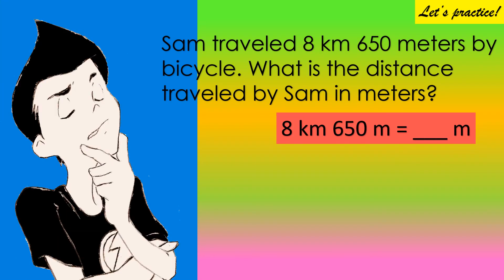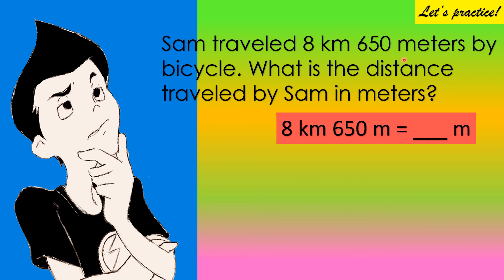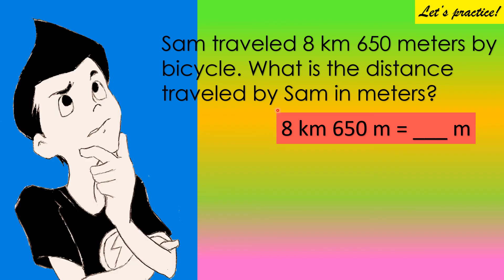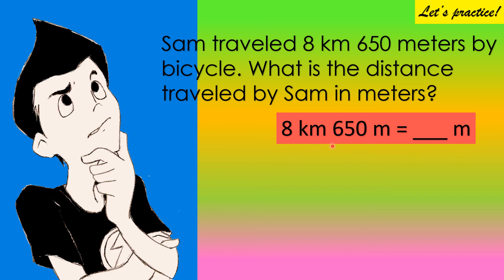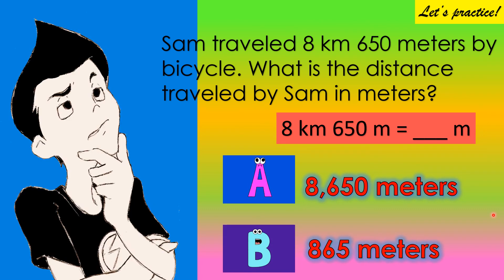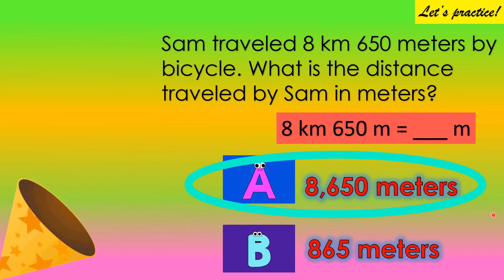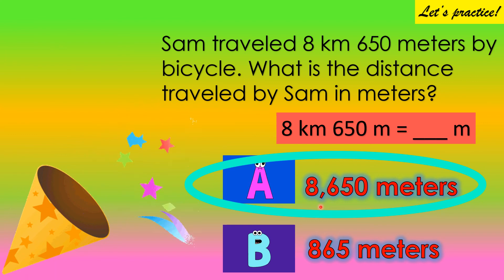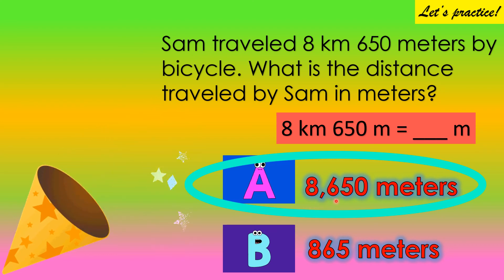Let's read this word problem. Sam traveled eight kilometers and six hundred and fifty meters by bicycle. What is the distance traveled by Sam in meters? Choose your answer between letter A and letter B. The correct answer is letter A — eight thousand six hundred and fifty meters. Wow, I like it!